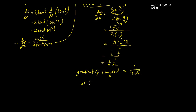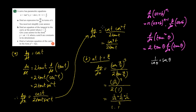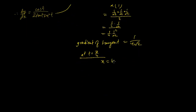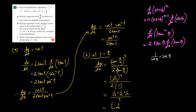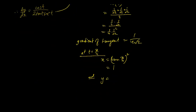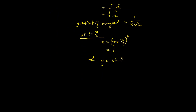Now we need the point. At t = π/4, the x-coordinate is tan² t, which means tan(π/4) whole squared. tan(π/4) is tan 45° = 1, and 1 squared is 1. And y equals sin t, so sin(π/4) = sin 45° = 1/√2.